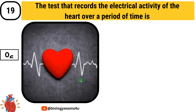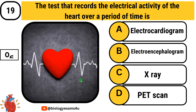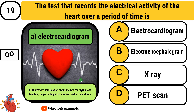Question number 19: The test that records the electrical activity of the heart over a period of time is — Option A: electrocardiogram. Option B: electroencephalogram. Option C: X-ray. Option D: PET scan. ECG provides information about the heart's rhythm and function and also helps to diagnose various cardiac conditions.